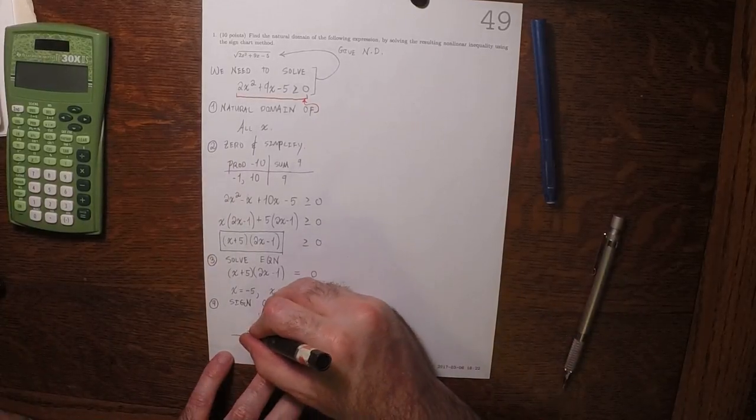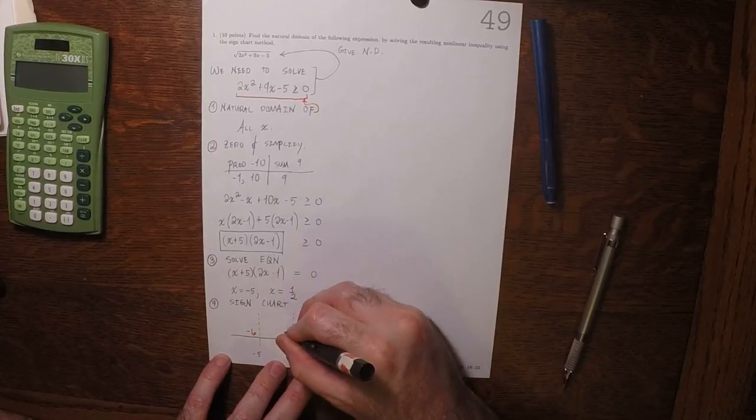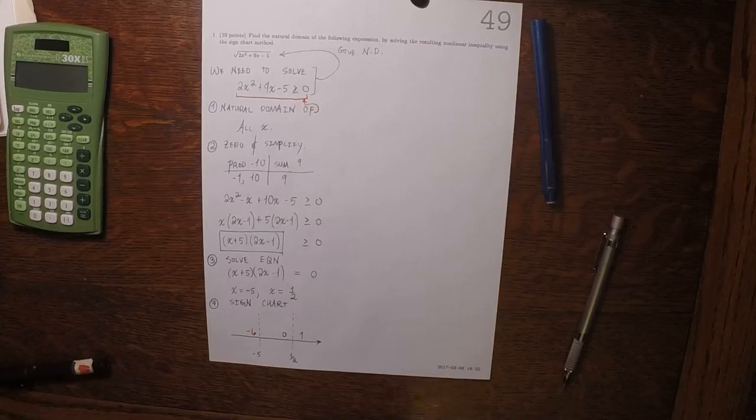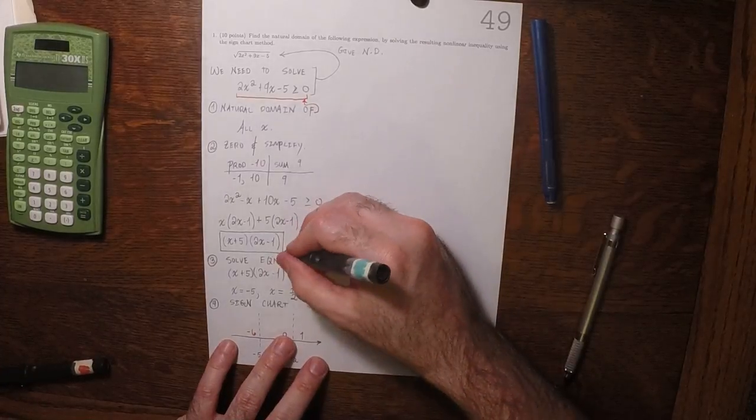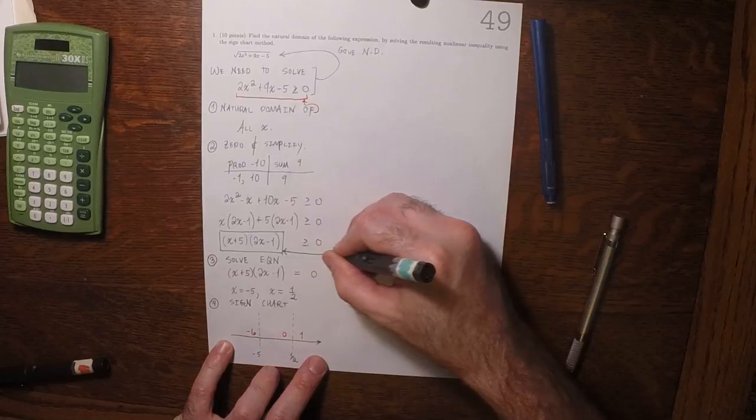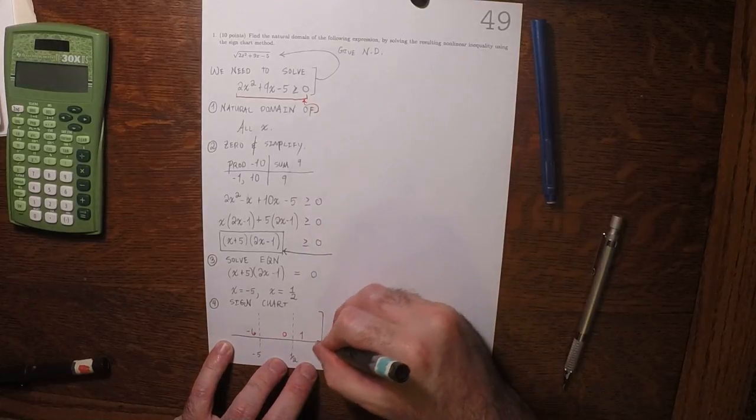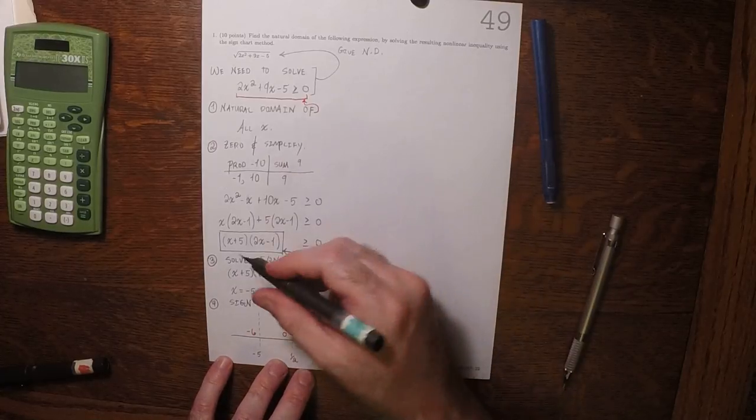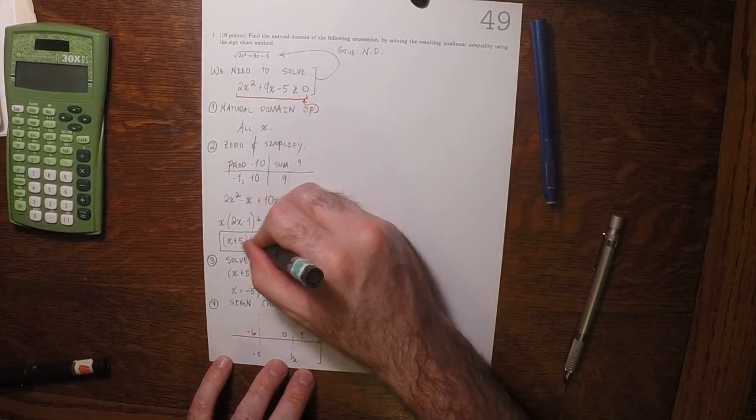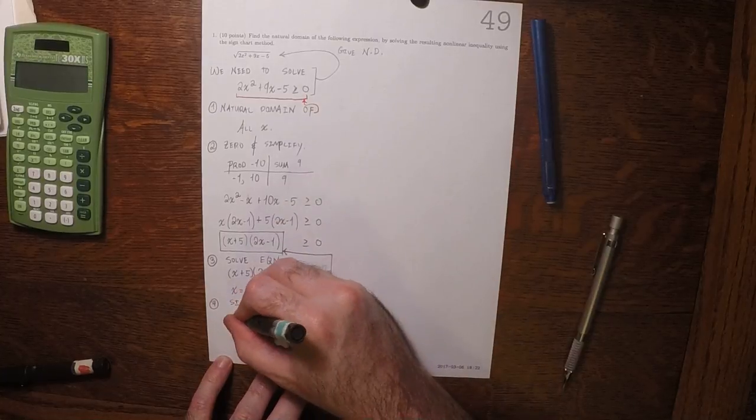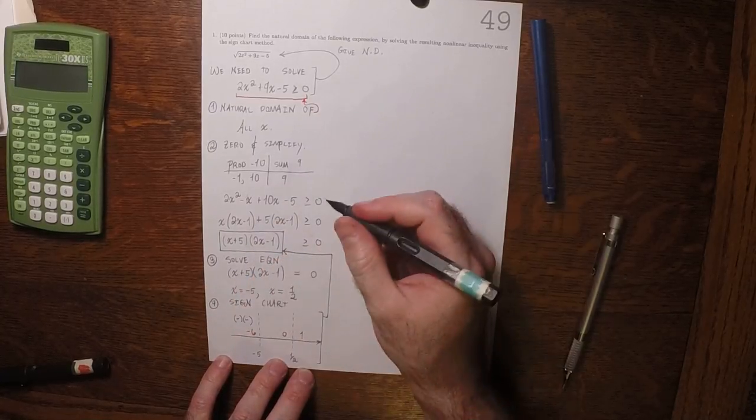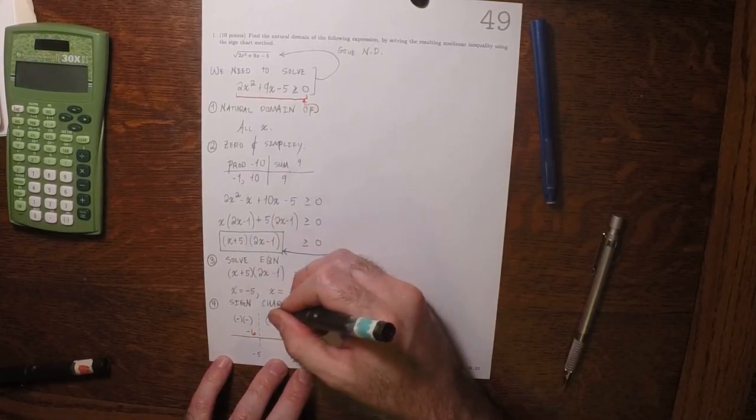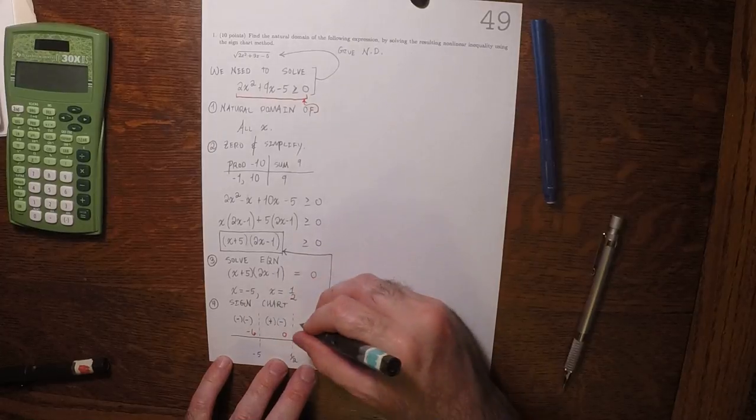So how about test points? Negative 6, 0, and 1. We're going to take those values and plug them in to right there. So if you plug in negative 6, that'd be negative and then negative again. If you plug in 0, that'd be positive and then negative. If you plug in 1, that'd be positive and then positive.